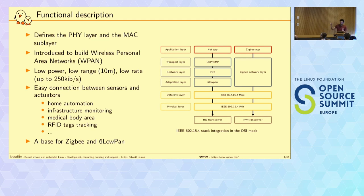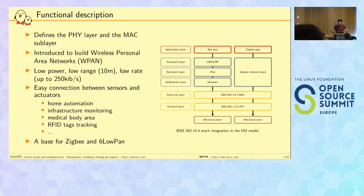Here is a short picture that shows where the specification fits in the system. You have a kind of an OSI model on the right. The specification brings two layers: the PHY layer and the data link layer — PHY and MAC. This was first introduced to create low power, low range, and low rate networks.